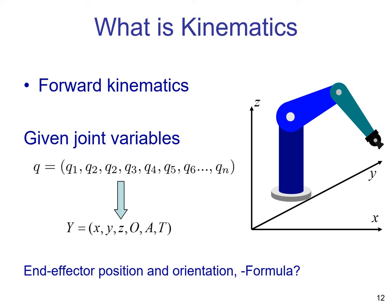What about position and orientation of the end effector? We're going to group all these variables into a vector named Y, containing the position of the end effector — X, Y, and Z — and the orientation of the end effector, which is also very important, with variables O, A, and T. The problem of forward kinematics is to relate these joint variables with the end effector.